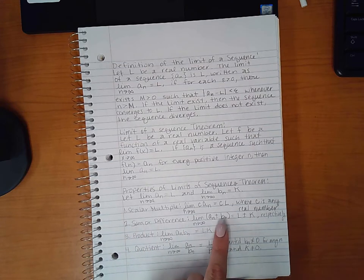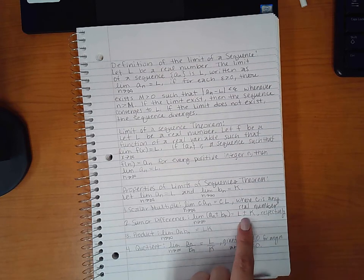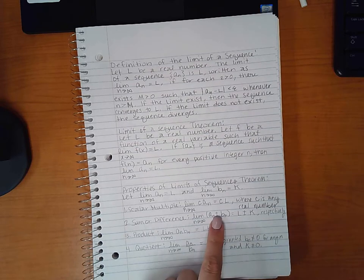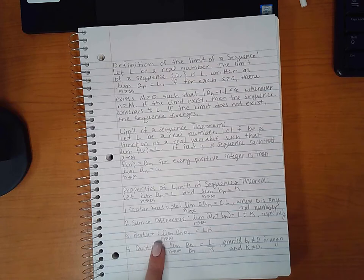The sum or difference. So if I add or subtract these two sequences from each other and I take the limits, I'm going to get their limit values added or subtracted together as well, respectively, of course. So if there's a plus here, there's a plus here. If there's a minus here, there's a minus there.